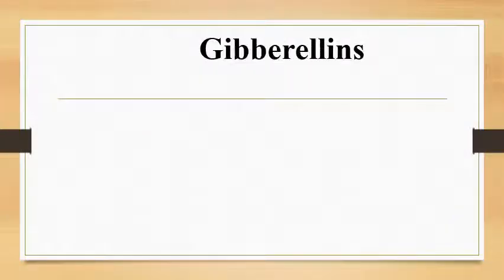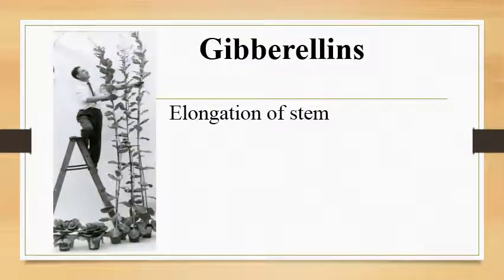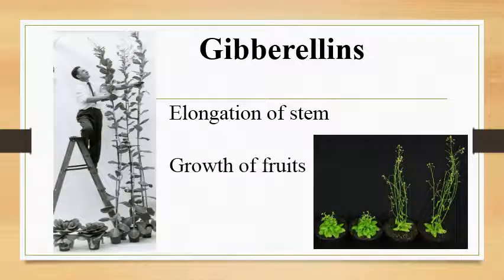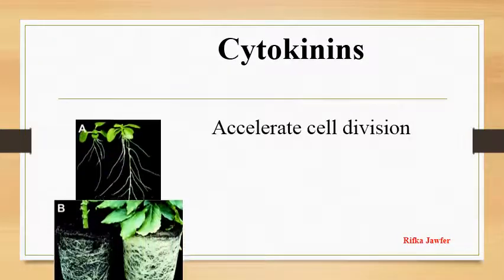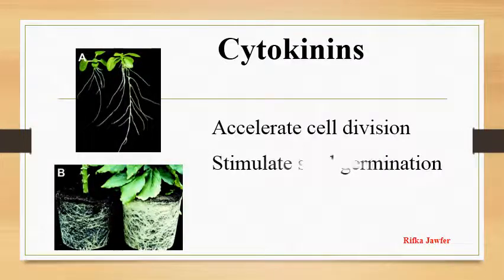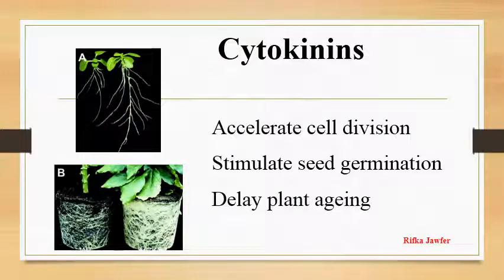Gibberellins promote mainly the elongation of stem and growth of the fruits. Cytokinins accelerate cell division. So the growth of flowers, leaves, fruits and roots are accelerated. They also stimulate seed germination and delay plant aging.